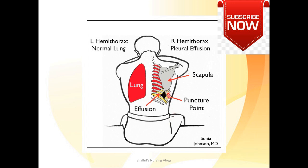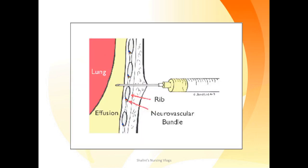This picture clearly shows the puncture point at the costophrenic angle where fluid is visible. It is always better to guide your needle using ultrasound, and remember to always go above the rib — going below the rib risks injuring the neurovascular bundle. With thoracentesis, you drain the effusion; if it is large, consider inserting an intercostal drain tube, and if that is not effective, proceed to emergency thoracostomy.